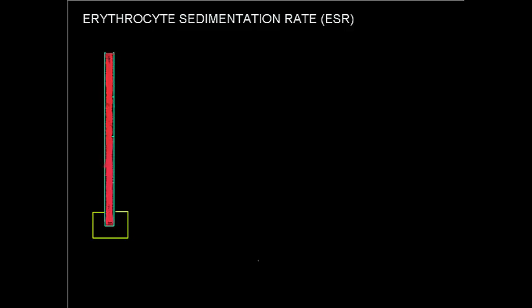Today we would like to have a good look at erythrocyte sedimentation rate. Looking at the term, we can see we're dealing with erythrocytes — red blood cells — sedimentation, which is how particles in a solution settle out into different layers, and lastly a rate. In this case, we're looking at a distance measured in millimeters over a period of one hour.